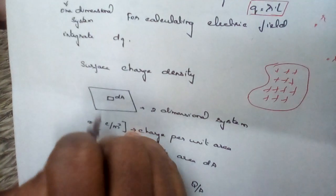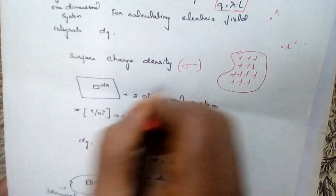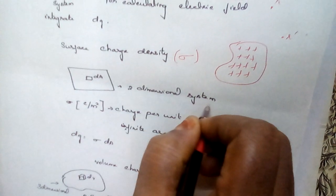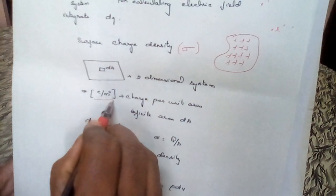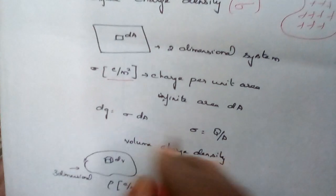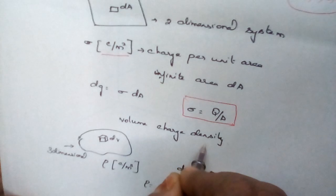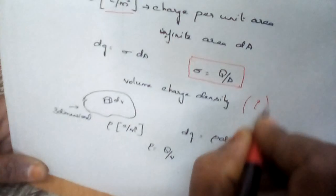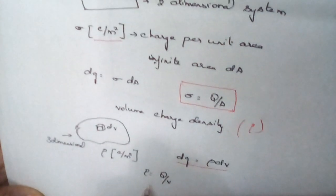If we consider a surface and take the elemental area DS, the surface charge density is given by the notation sigma — it is the two-dimensional system. The charge per unit area has the unit coulombs per meter squared. The surface charge density is given by DQ equal to sigma times DS, where sigma equals Q divided by A. In case of volume charge density, it is given by the notation rho, and the volume charge density is given by DQ equal to rho times DV, where rho equals Q divided by V.